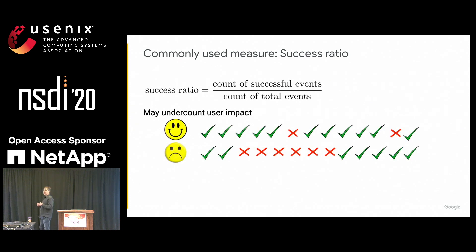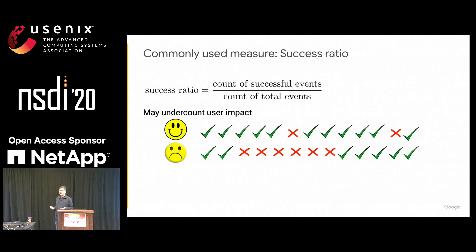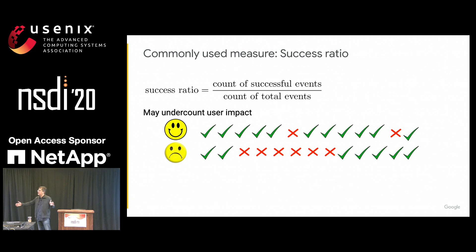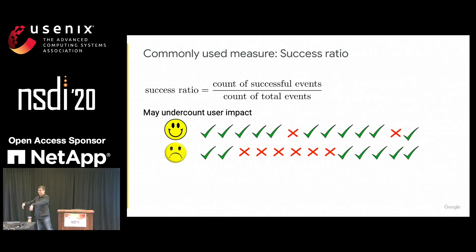This metric has two significant problems. The first problem is that it can undercount the impact of an outage on our users. For example, consider a user who gets mostly successful operations, and every now and then gets one unsuccessful operation. That user is going to be mostly happy because when they retry it, it works and they can get their work done.